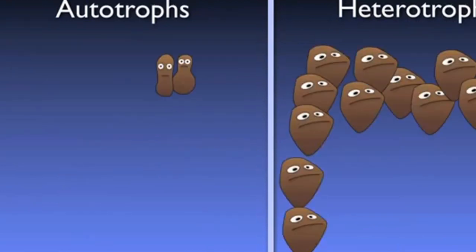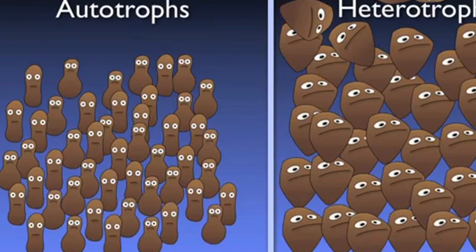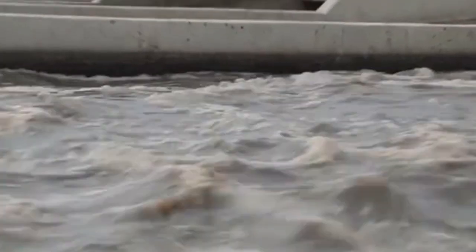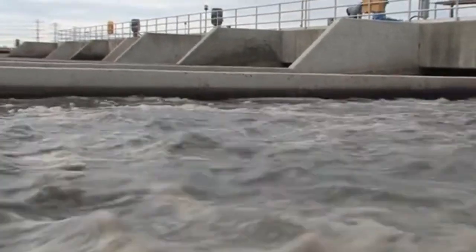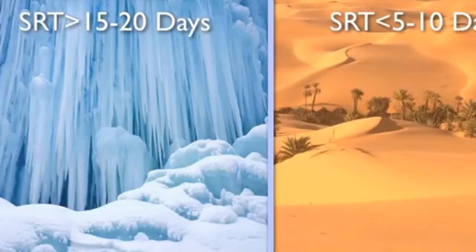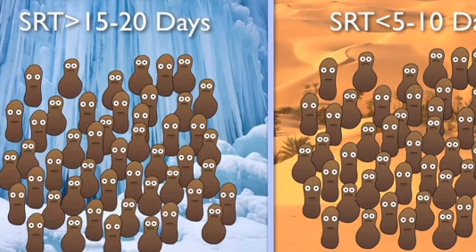In contrast to heterotrophic BOD-consuming bacteria, autotrophic nitrifiers require more time to mature and maintain their population in a biological wastewater treatment system. The nitrifiers dictate the SRT in nitrogen-reducing plants. How fast nitrifiers grow depends on the temperature of the wastewater and the amount of dissolved oxygen present. Higher temperatures and DO concentrations mean faster growth; colder temperatures and lower DO concentrations mean slower growth.